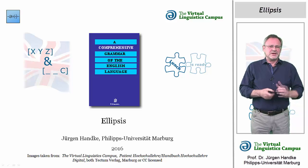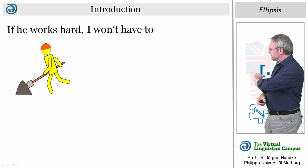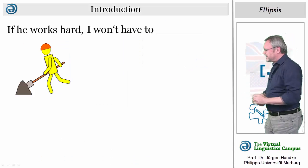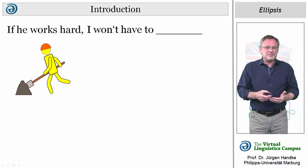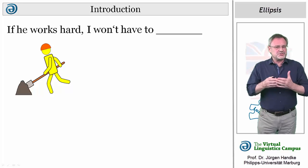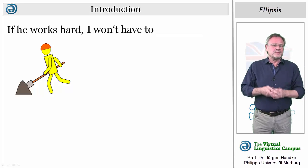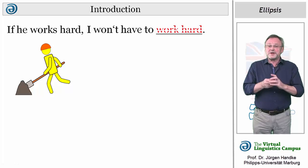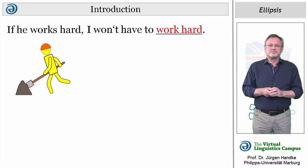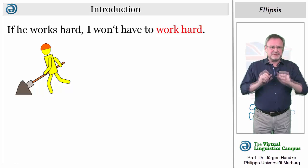Here is an example. In 'If he works hard, I won't have to,' the infinitive marker 'to' occurs without the normally obligatory predication 'work hard.' This has been omitted, or ellipsted.